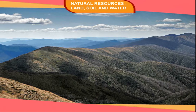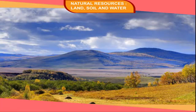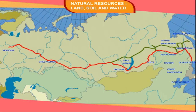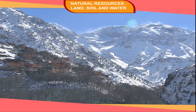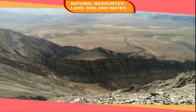The Rockies and Andes in North and South America respectively, and the Pyrenees and Alps in Europe, are very huge mountain ranges. In Asia, the Himalayas, Kingan, and Yablonoi are the main mountain ranges. In Australia, the Great Dividing Range is the main range, while in Africa, the Atlas Mountains in the northwest and Drakensberg in the southeast are the important mountain ranges.